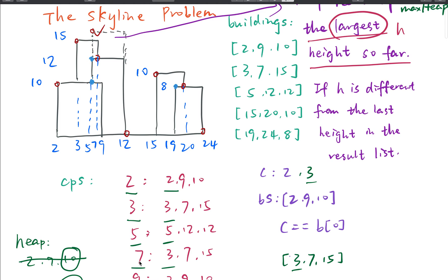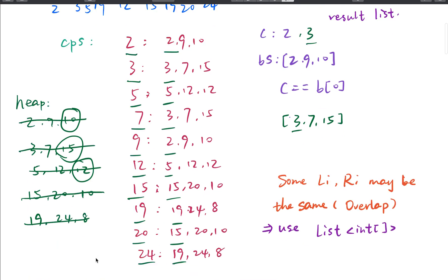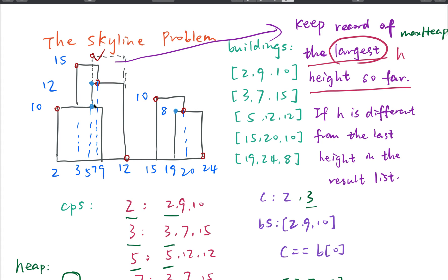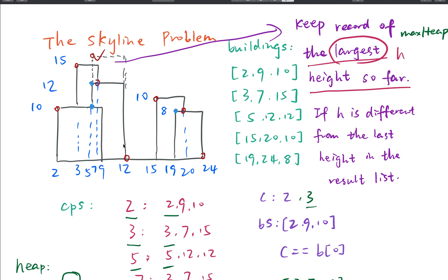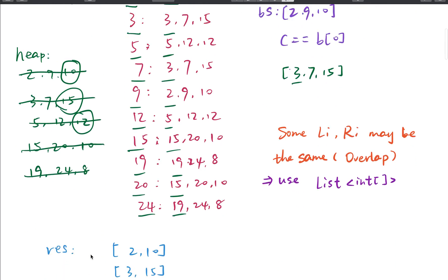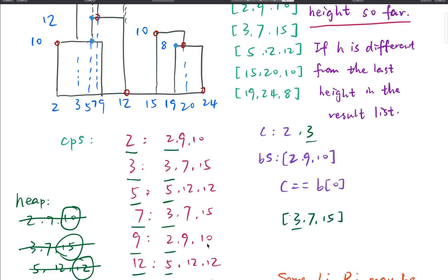Then we handle index 7. Since 7 is not equal to B[0] of building [3,7,15], we know it is the right index, so we remove that building from the heap. Now the maximum height in the heap is 12, which is different from the last height in the result list (15), so we save [7, 12] into the result list.